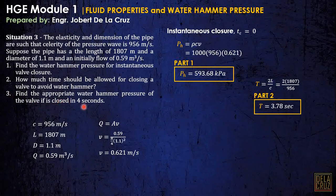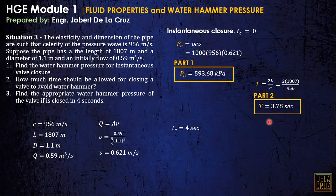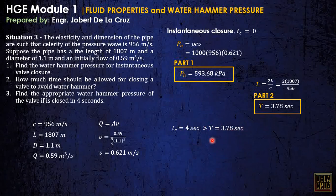For number three, find the appropriate water hammer pressure if the valve is closed in 4 seconds. We have TC (time to close) = 4 seconds. Now observe: TC is greater than the required time T. When this happens, since the closing time is longer than the required time, this is considered a slow closure — the valve is closed slowly.